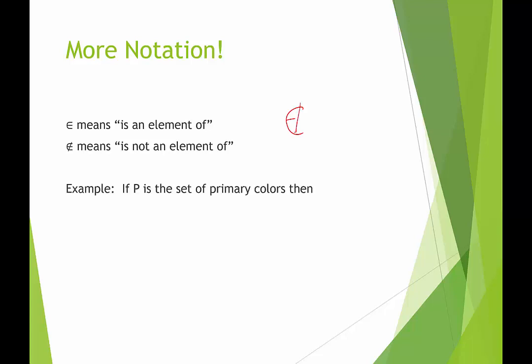So for example, if P is the set of primary colors, then we would say red is an element of P, because red is a primary color. Purple, on the other hand, is not a primary color, it's a secondary color. So we would say purple is not an element of P.